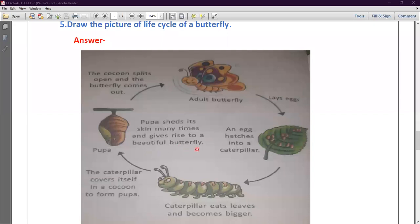Pupa sheds its skin many times, and gradually a beautiful butterfly is formed. In the last, the cocoon splits open and the butterfly comes out. This is the life cycle of a butterfly.